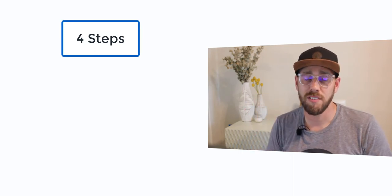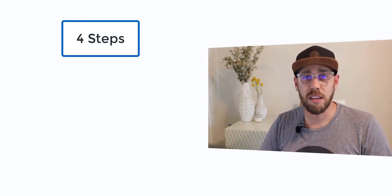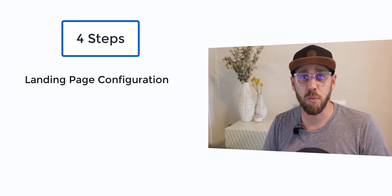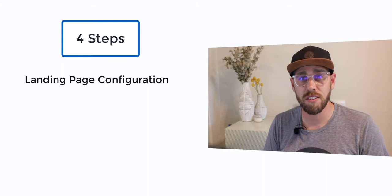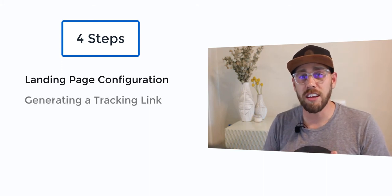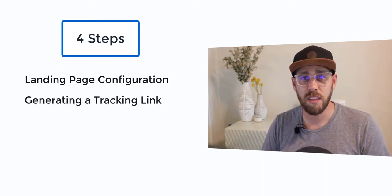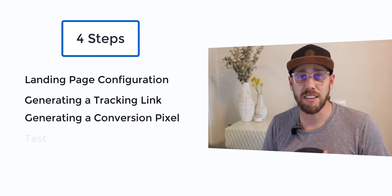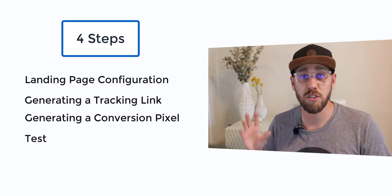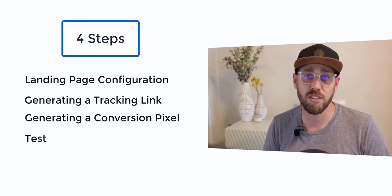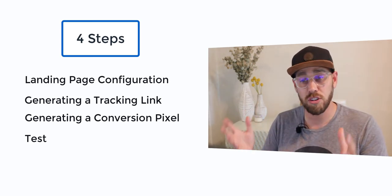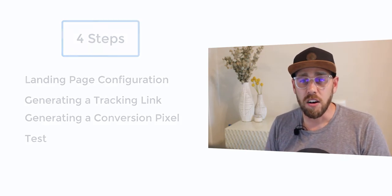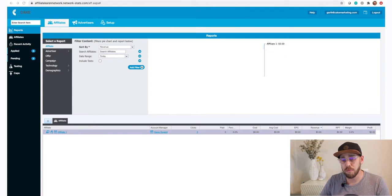We're going to show you four primary steps. The first step is offer landing page configuration, to make sure we are passing all the right values to your advertiser. Second, generating a tracking link for your affiliate. Third, generating a conversion pixel for your advertiser. And lastly, we're going to test it — showing you how to track a click and test your conversion pixel.